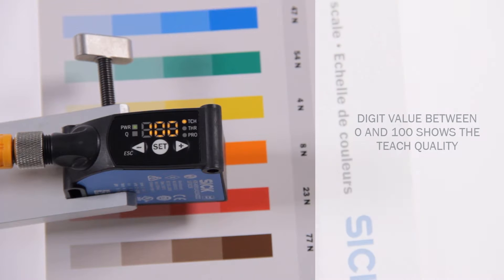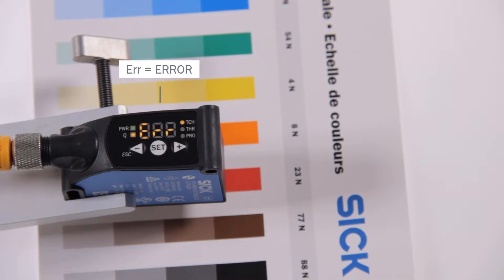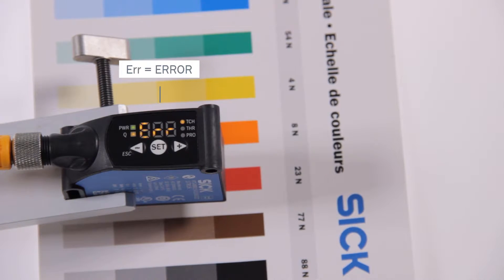A digit value between 0 and 100 shows the quality of teach. The higher the number, the better the quality. If ERR for error is displayed, a fault the teach is indicated and the teach-in needs to be redone.